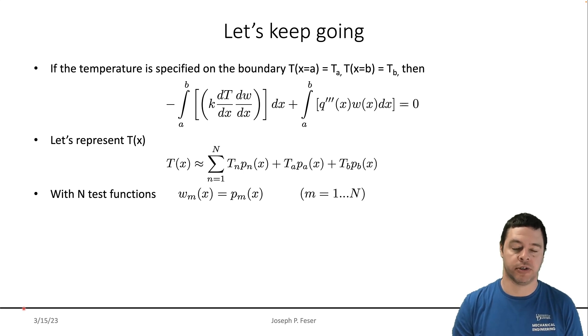We're going to write our differential equation in the weak form. For the purpose of plugging in for a specific case, let's assume that the temperatures on the boundaries are given. Let's suppose that I'm given a temperature TA on the left boundary and a temperature TB on the right boundary.